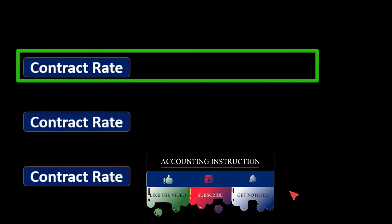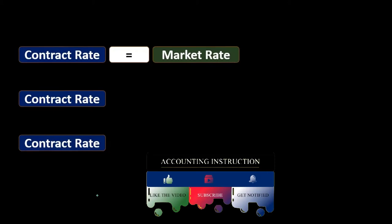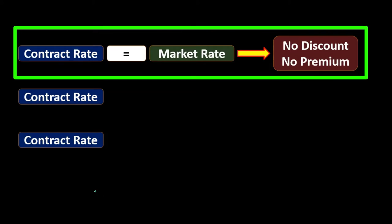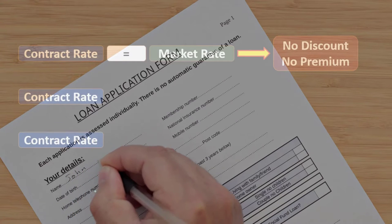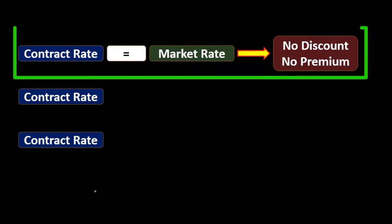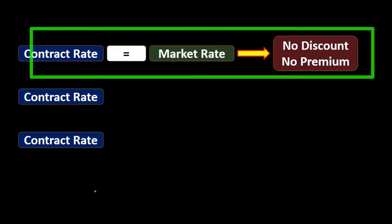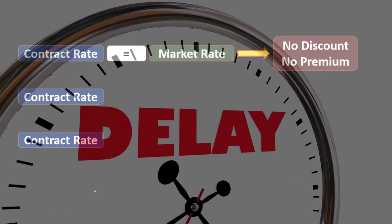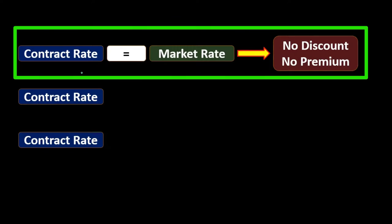This gives us three types of options within a bond. The first and easiest is where the contract rate equals the market rate. If the contract rate is equal to the market rate, we can issue the bond with no discount and no premium — it's very similar to a normal loan transaction, because the rate stated on the bond matches the market rate exactly. This would only happen if we issued the bond at the same time we made it; any time delay makes a mismatch more likely.